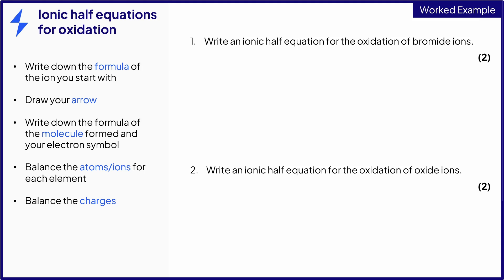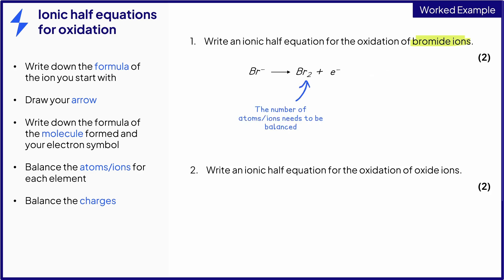Let's look at the first example, which asks: write an ionic half equation for the oxidation of bromide ions. The element bromine is in group 7, so it will form ions with a 1− charge. Begin by writing this down, then draw your arrow and the electrons being lost on the right-hand side. Bromine is a diatomic molecule, so it has the formula Br₂. This equation would score 1 mark, because similar to the hydrogen example, the atoms and ions for bromine are unbalanced — there are two bromine atoms on the right-hand side but only one bromide ion on the left-hand side, so this is balanced by placing a 2 in front of Br⁻.